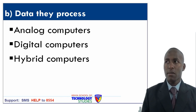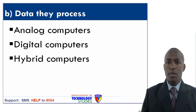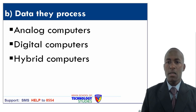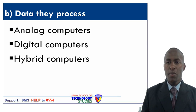Under data they process, we have three types of computers: analog computers, digital computers and hybrid computers. Analog computers are used to measure physical magnitude. Digital computers are normally used in commercial industries, even for performing arithmetic calculations using binary numbers. Hybrid computers have both the characteristics of analog computers and digital computers.